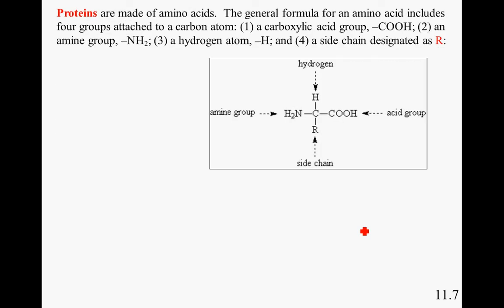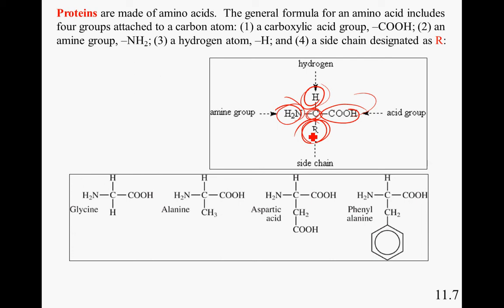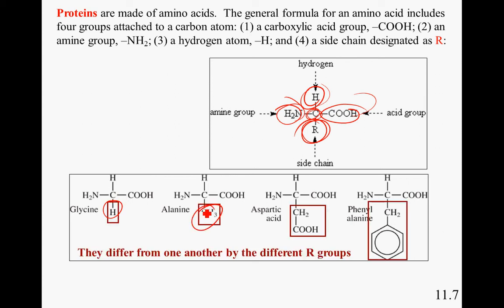Proteins are made from amino acids. The general formula for an amino acid includes four groups attached to a single carbon atom: a carboxylic group, an amino group, a hydrogen, and then on the fourth side is the R group — the part that changes, which is why we have 20 different amino acids. For instance, in glycine it's just a hydrogen, while in alanine it's a CH3. Everything else remains the same.